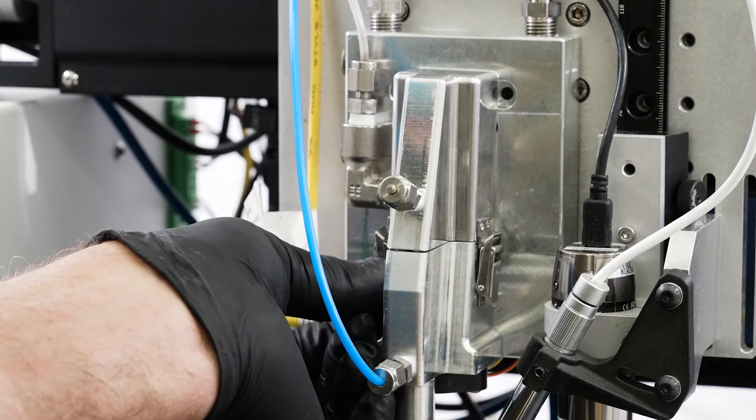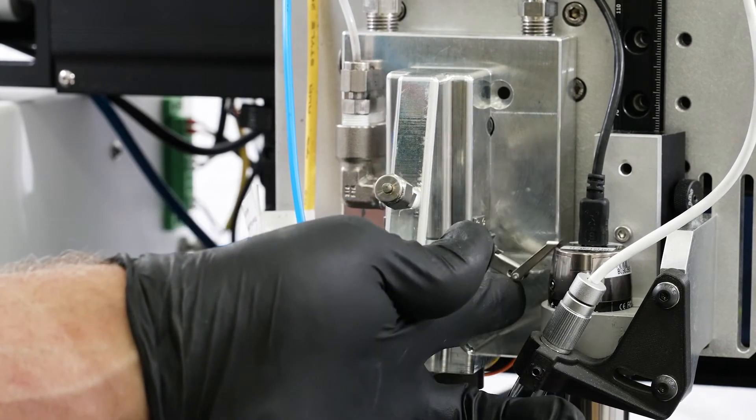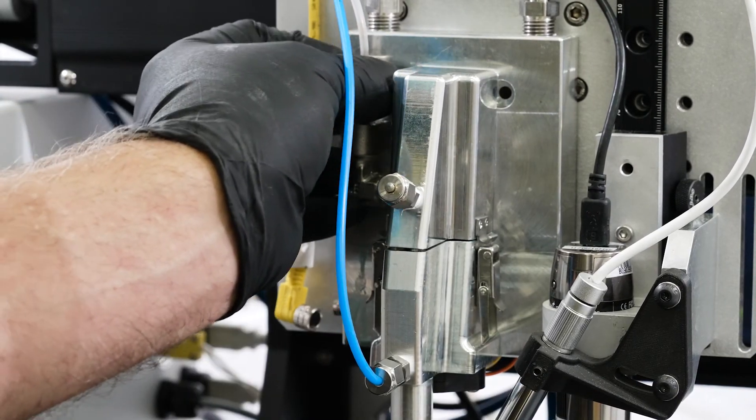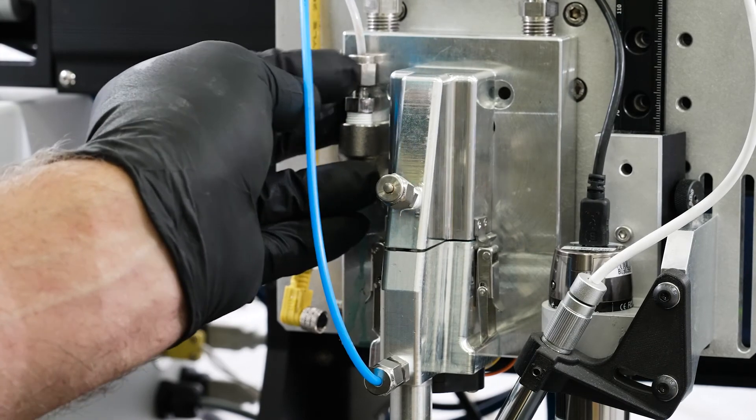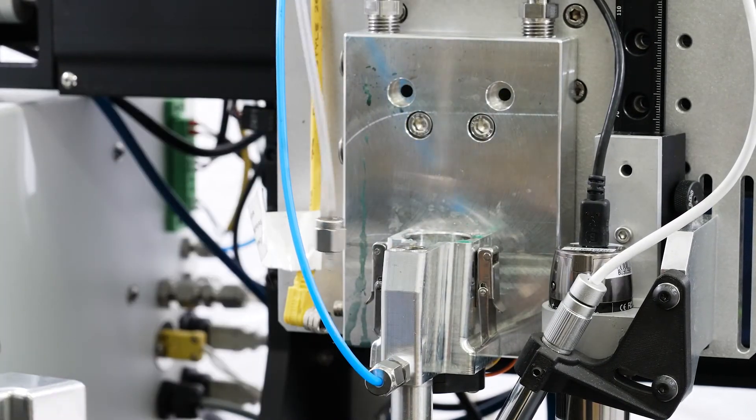16. First, unclamp the two toggle clamps, one from each side of the ink cartridge, and then remove the aerosol gas inlet tube by unscrewing the swagelok fitting.